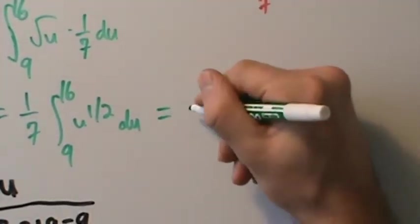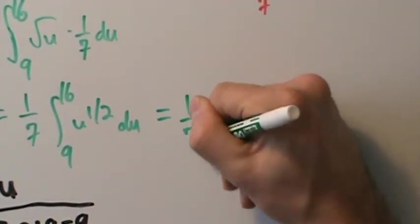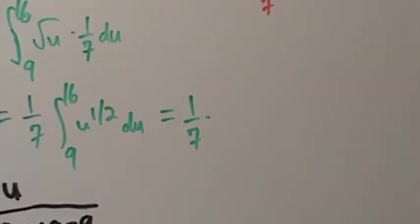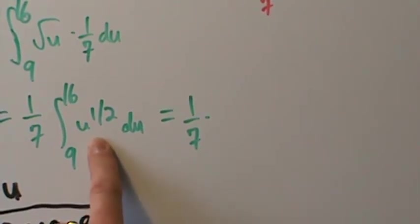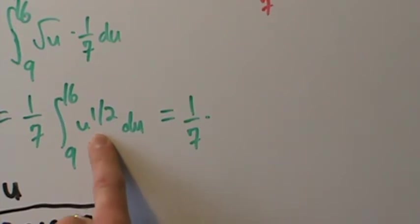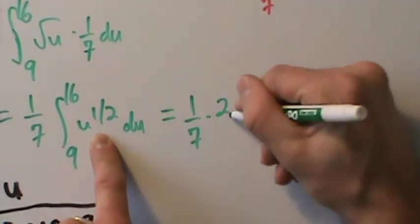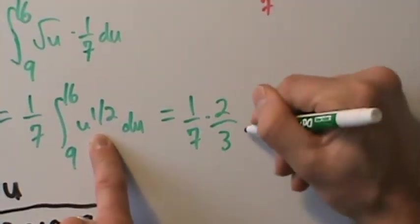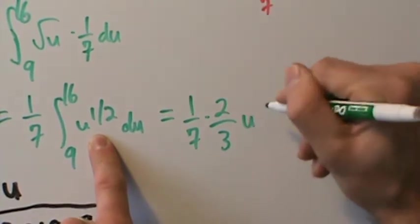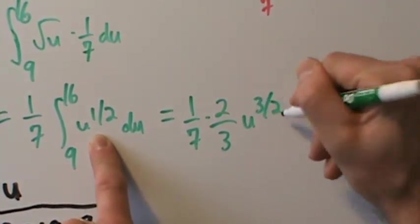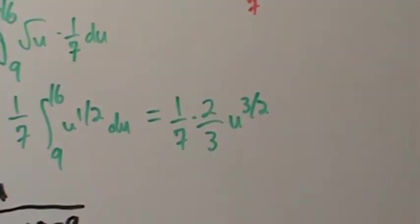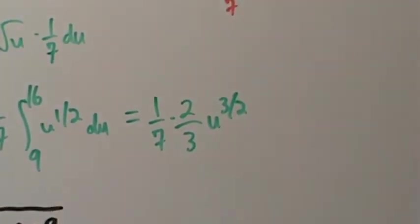The (1/7) is still out there; this is straight-up power rule. Integrating u^(1/2): add 1 to the exponent — 1/2 + 1 = 3/2 — and divide by that, giving (2/3)u^(3/2), evaluated from 9 to 16.